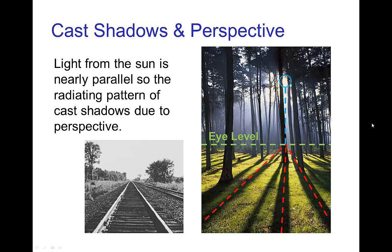You may have noticed that in that photo, the cast shadows made a radiating pattern. That pattern is entirely due to perspective. The rays of light coming from the sun are nearly parallel, and so that effect of appearing as if the shadows converge in the distance.